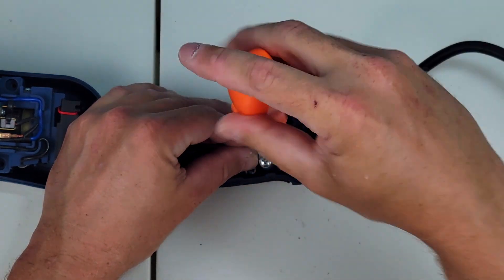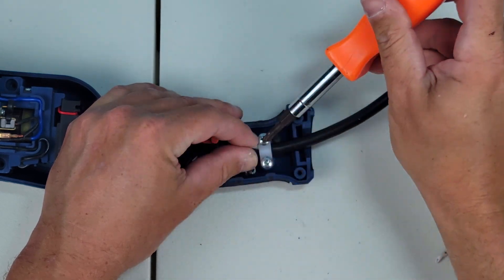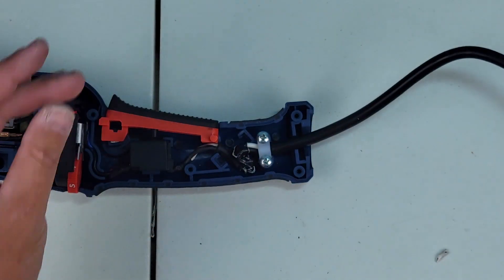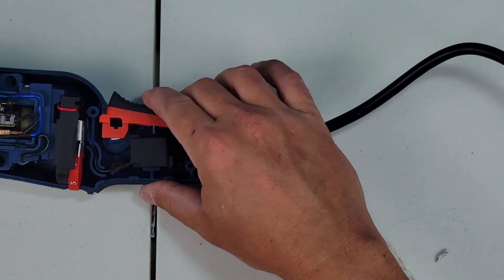And I went back and forth tightening these. I didn't want to tighten one side all the way down, so just went back and forth and made sure everything was even and snug. Tested the trigger, make sure that it's working, and it looks good.